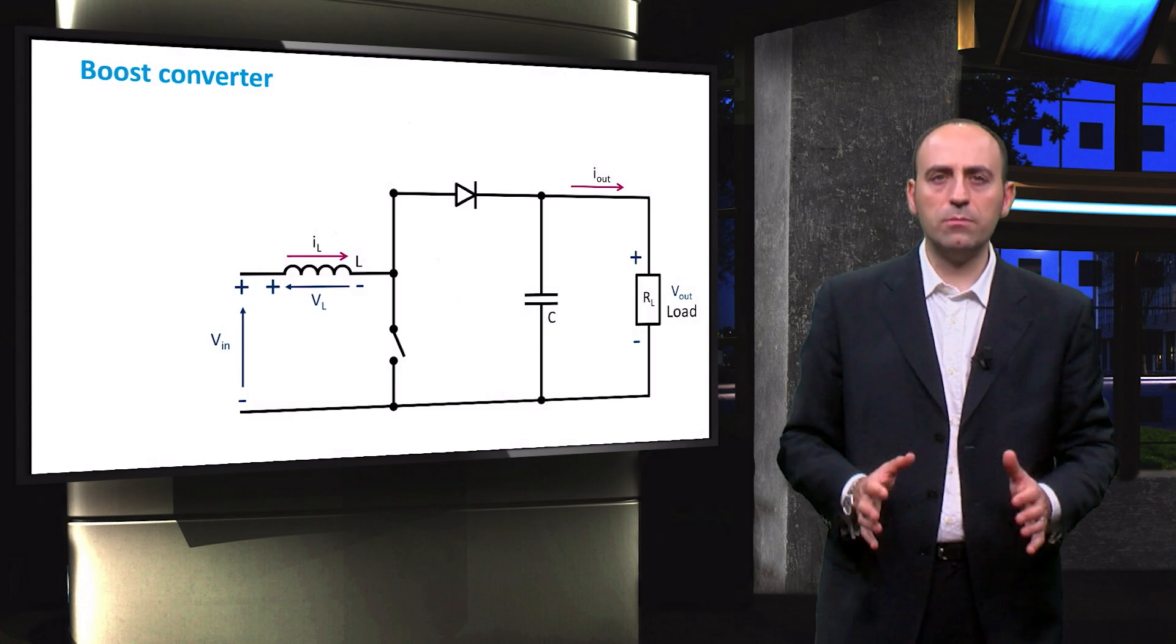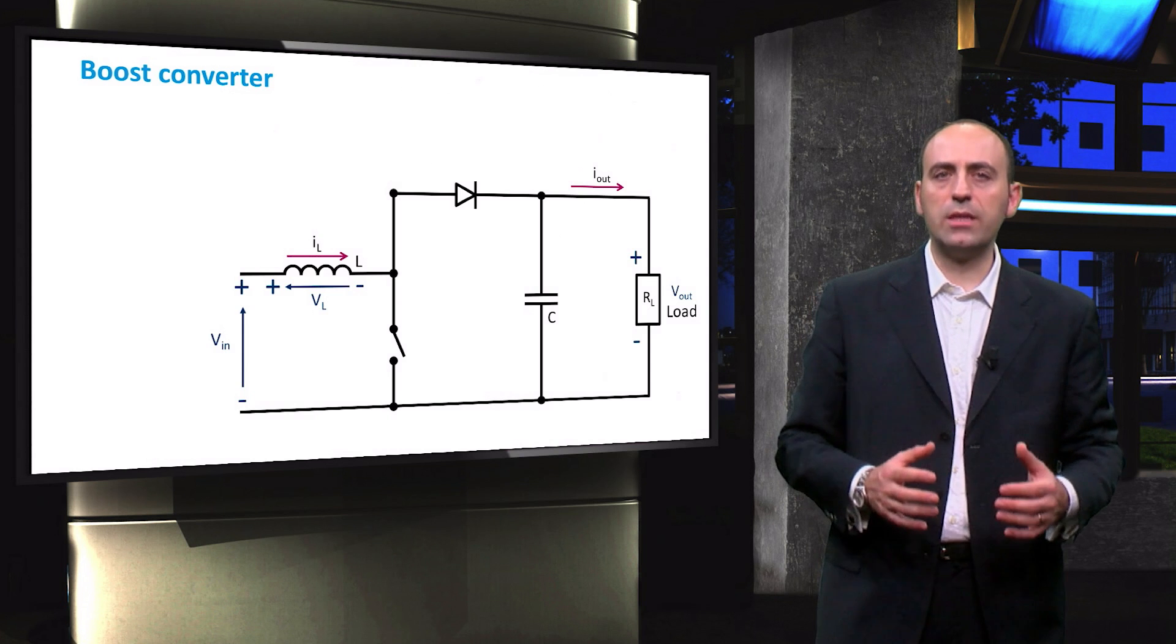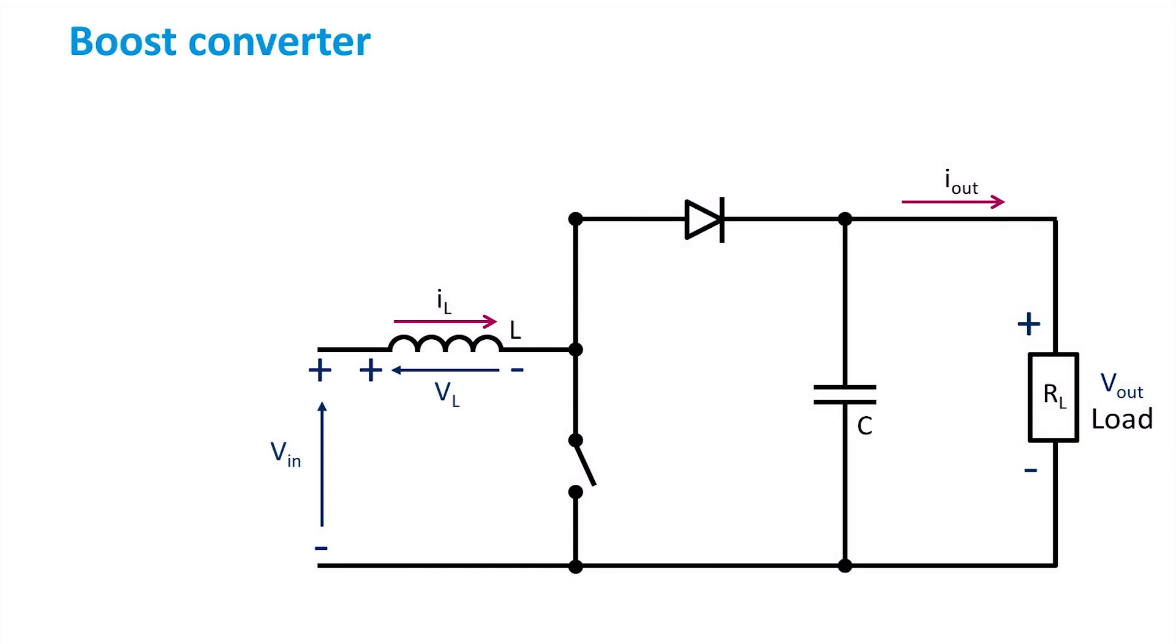The circuit of the simplest boost converter is similar to the step-down converter. We have the PV generator on the left, characterized by input voltage Vin. The coil is placed right next to it. The circuit includes a switch with a certain frequency, a flyback diode, and connected in parallel, the smoothing capacitor acting as a filter and the purely resistive load.